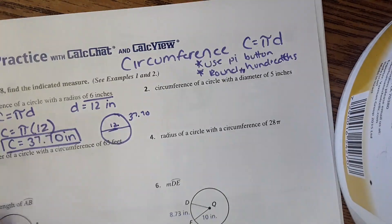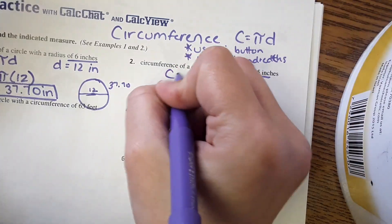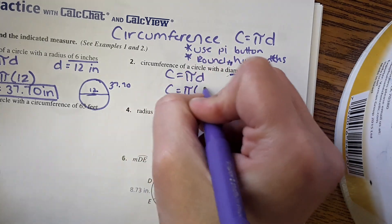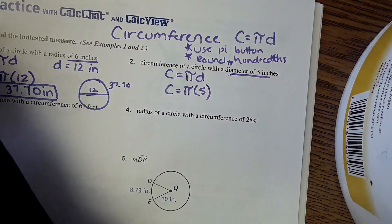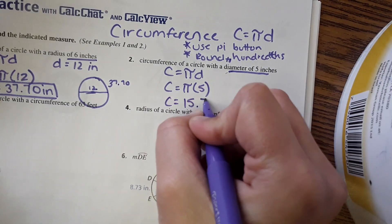Number two, circumference of a circle with diameter of five inches. So this time they just give us the diameter, again same equation, pi times diameter, pi times five. Five pi is fifteen point seven one inches.